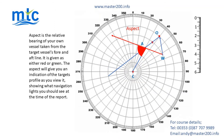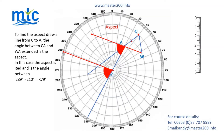Aspect is the relative bearing of your own vessel taken from the target vessel's fore and aft line. It is given either as red or green. The aspect obtained from the plot will give you an indication of the target's profile as you view it, showing what navigation lights you should see at the time of the report. To find the aspect, draw a line from C to A.